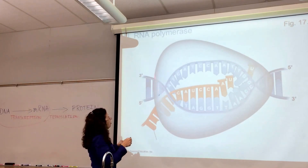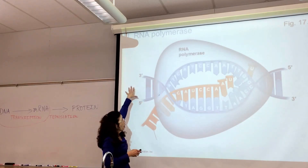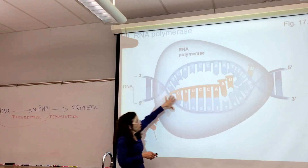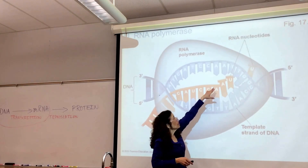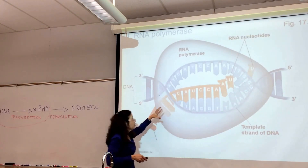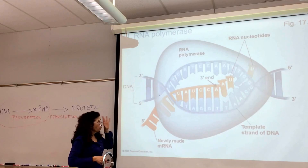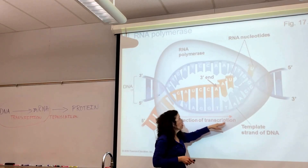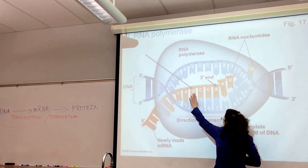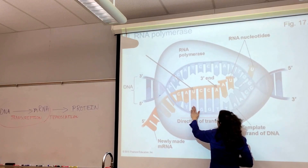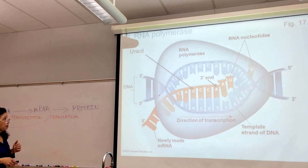RNA polymerase is the enzyme that actually pries open the DNA to utilize one side as a template strand, and then it's able to assemble RNA nucleotides and make that mRNA strand. The direction of transcription takes place from 3 prime to 5 prime, and for every adenine in DNA, a uracil base will be utilized instead of a thymine.